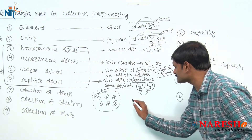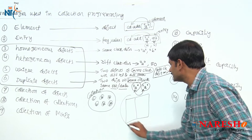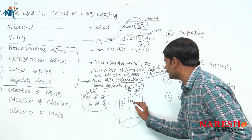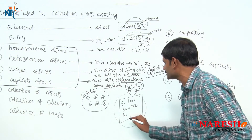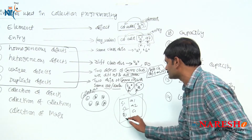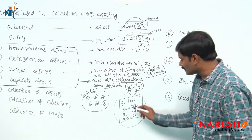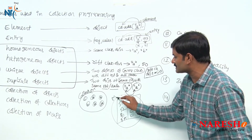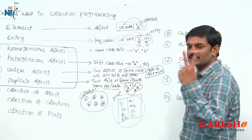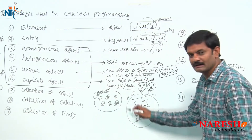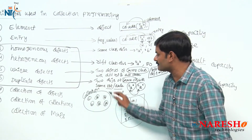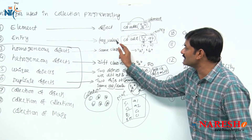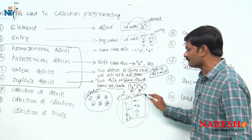Now, if I have a collection object that stores entries — entries means key-value pairs — such as student object mapped to address object, student object mapped to address object 2, bike object mapped to customer object, bank account object mapped to customer object — when there is a mapping value, then it is called a map. So there are two types: collection-type collection stores individual objects, whereas map-type collection stores key-value pairs.